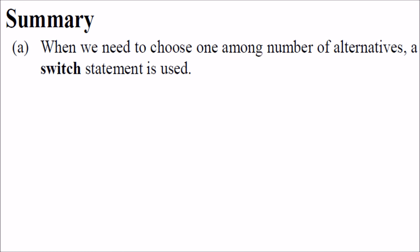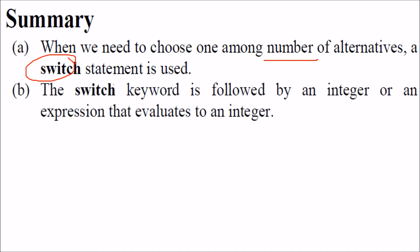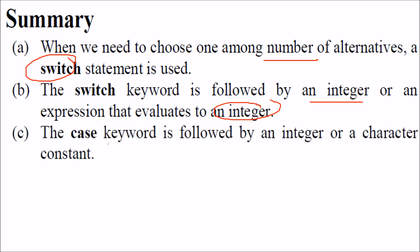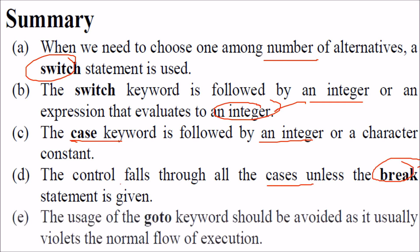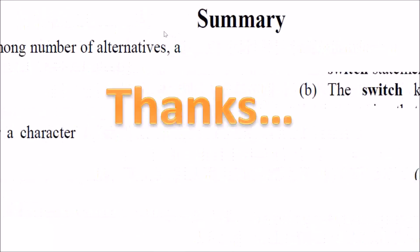To summarize: when we need to choose one among a number of alternatives, we use switch. The switch keyword is followed by an integer or an integer expression that evaluates to an integer — that is why characters are also allowed since they are internally treated as ASCII values. The case keyword is followed by an integer or character constant. Control falls through all cases unless break is encountered. The usage of goto should be avoided as it violates the normal flow of execution.